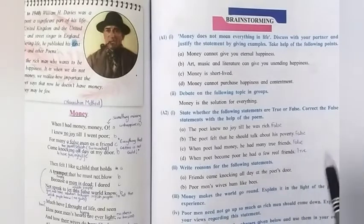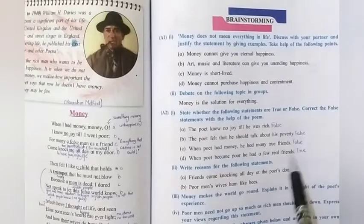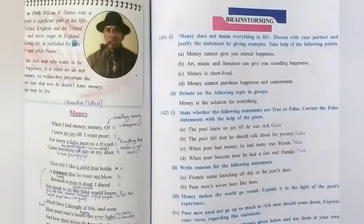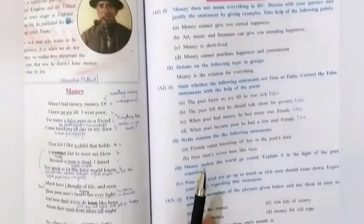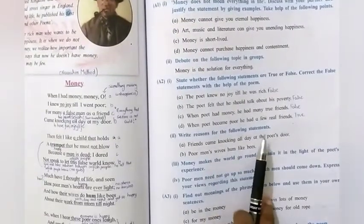Next one is when poet became poor, he had a few real friends. So, this particular sentence is true because we come to know by the last line that now I have no money. Oh, my friends are real though very few. That means the sentence is true.